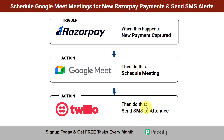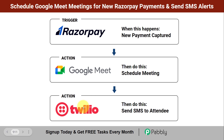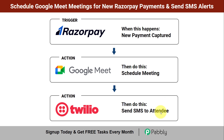Yes, it is possible to entirely automate this process by simply connecting Razorpay, Google Meet, and Twilio with the help of an automation software. After that, every time a payment is captured, the meeting will be scheduled automatically and the SMS will get sent automatically to the attendee. If you want to set this automation for yourself, come with me and I will show you the whole process step by step.